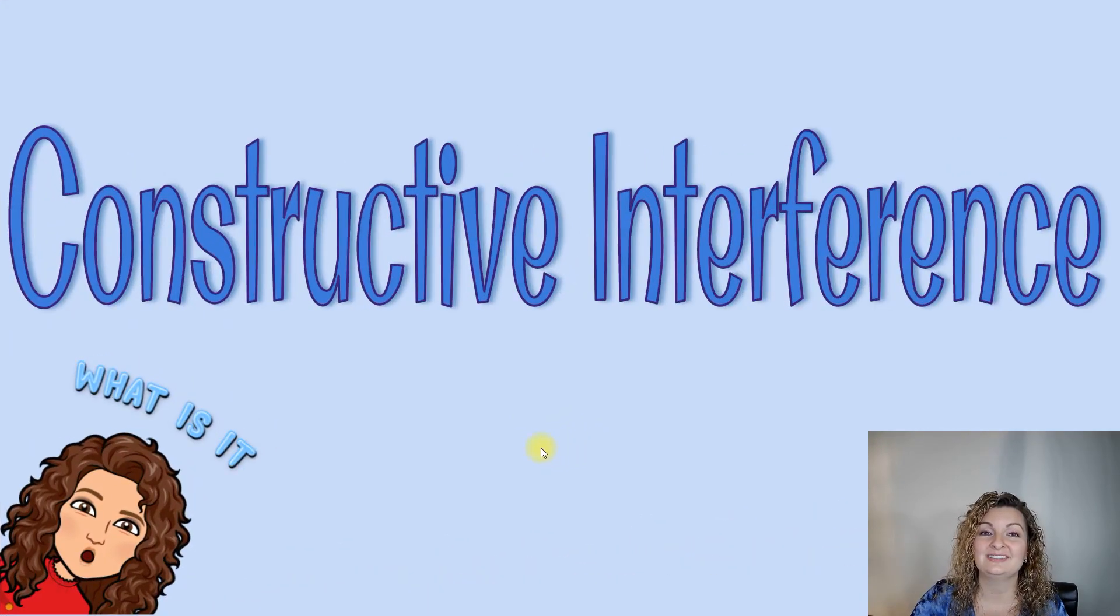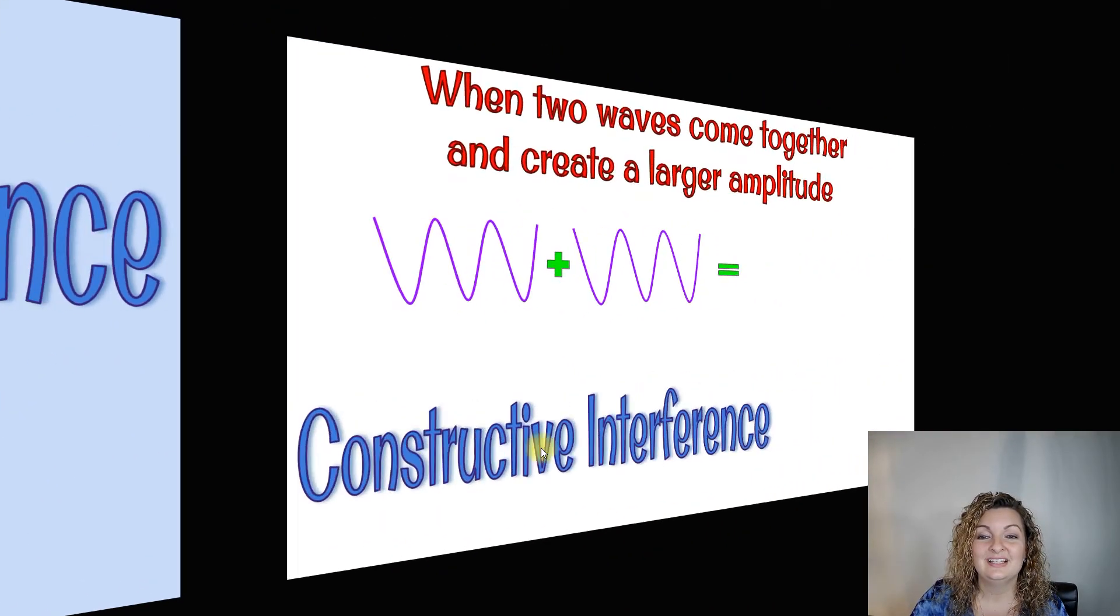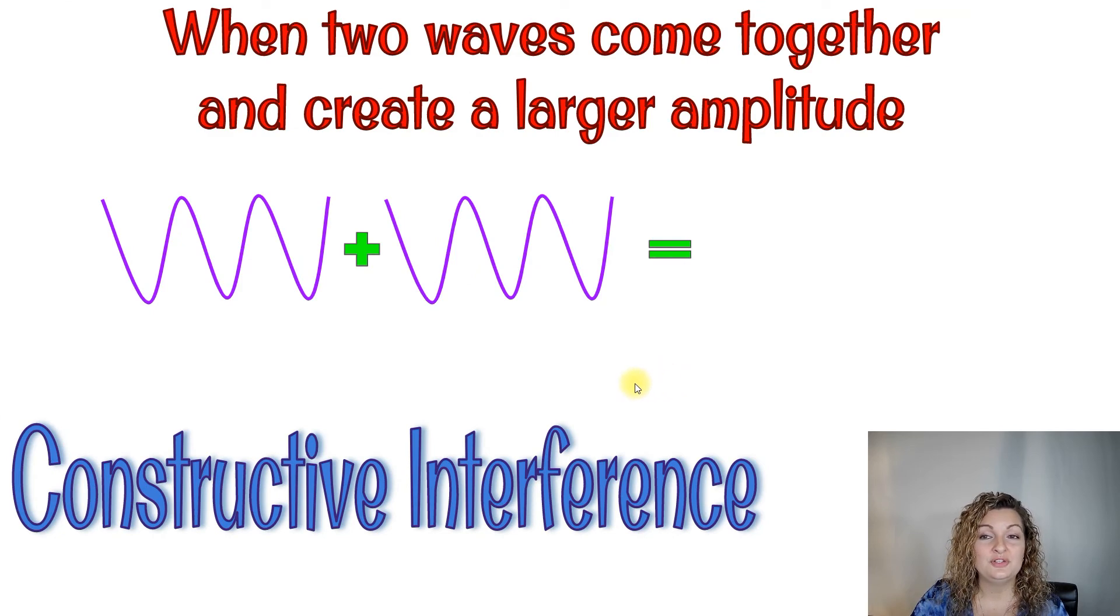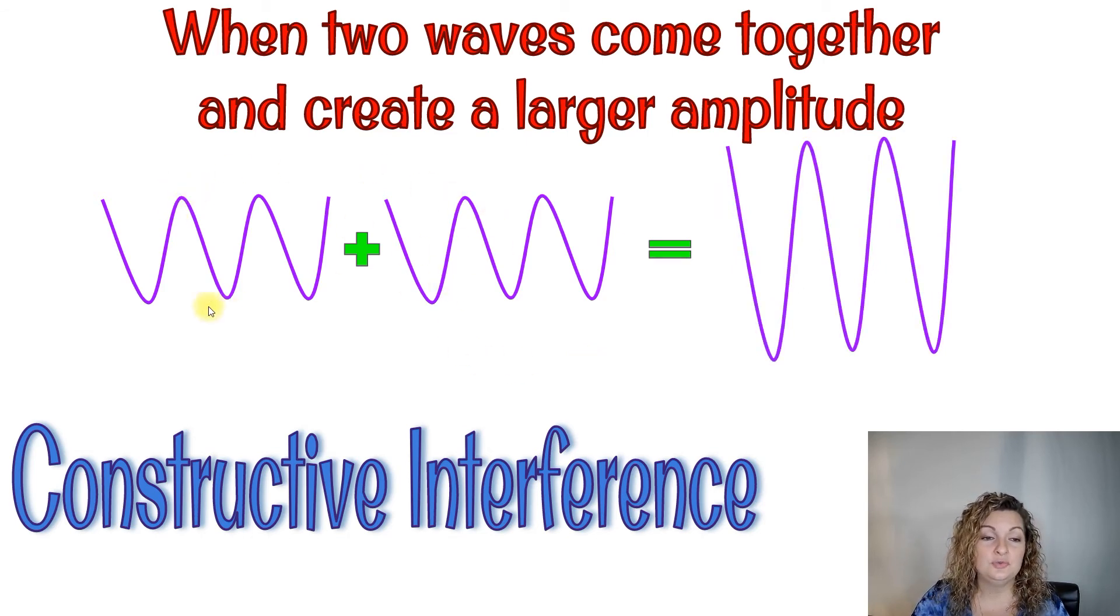Constructive interference. Constructive interference occurs when two waves come together and create a larger amplitude. Now when this happens, we have to have crests line up with crests and troughs line up with troughs in order to create that larger amplitude or that higher wave. Because this is really talking about wave height as the amplitude.